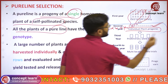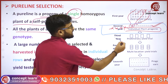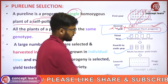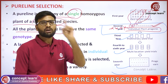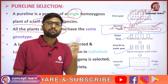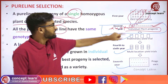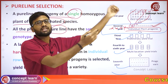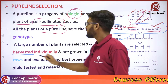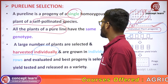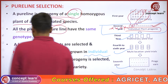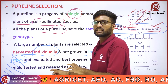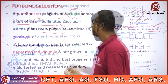The remaining steps — preliminary trials, multi-locational trials, multiplication, and distribution — are the same. The one and only difference between mass selection and pure line selection is that individual plant progenies are grown separately. Plants are harvested individually and grown in individual rows for yield testing and release.